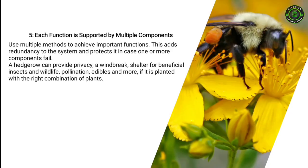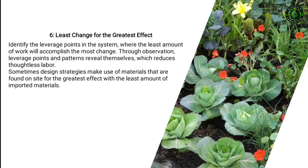Principle five: Each function is supported by multiple components. Use multiple components and multiple methods to achieve important functions. This adds redundancy to the system and protects it in case one or more components fail. A hedgerow, for example, can provide privacy, a windbreak, shelter for beneficial insects and wildlife, pollination, edibles, and more — if it is planted with the right combination of plants.